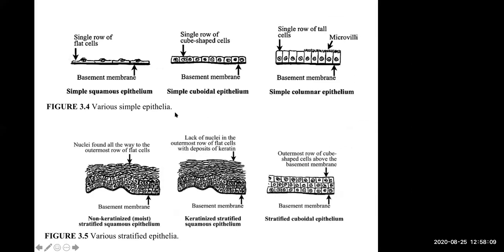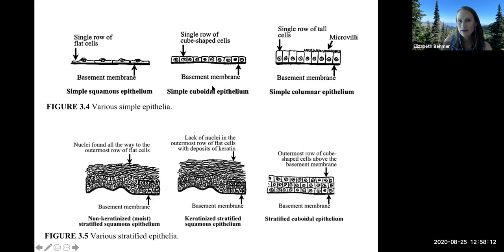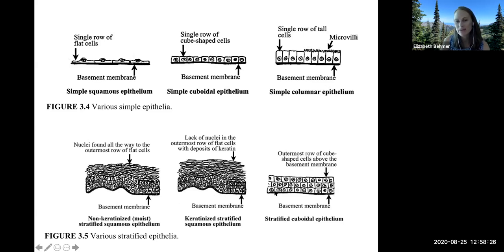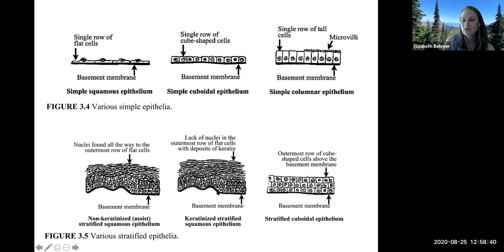Here are examples of various simple epithelium — squamous, cuboidal, or columnar. Stratified epithelium has multiple layers of cells. We can have stratified squamous epithelium: non-keratinized, meaning the cells are alive towards the exposed surface, and keratinized stratified squamous, where the cells are dead and lack nuclei on the exposed surface. Stratified cuboidal epithelium has multiple layers of cube-shaped cells.